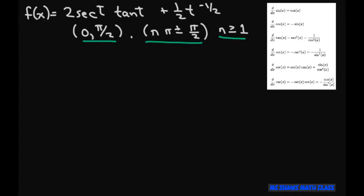So the antiderivative, let's write this as F of T, big F of T. So we're going to look at this side and go backwards. So for this, that's just going to be 2 secant of T.